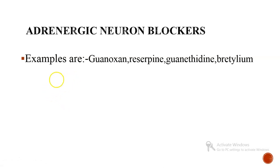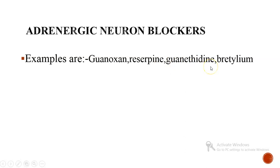The third category is adrenergic neuron blockers. These are drugs that reduce the storage or release of norepinephrine. The examples are guanoxine, reserpine, guanethidine, and bretylium.